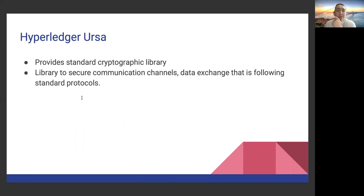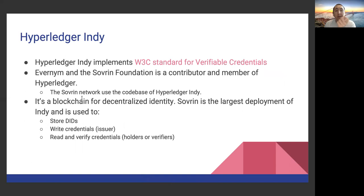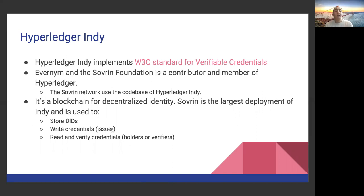Hyperledger Ursa provides a standard cryptographic library for securing communication channels. Hyperledger Indy was initially created by Evernym and the Sovrin Foundation as a blockchain for decentralized identity. It stores DIDs and adapts to identity concepts. It's the most developed tool in this space because it started early and has many contributors.